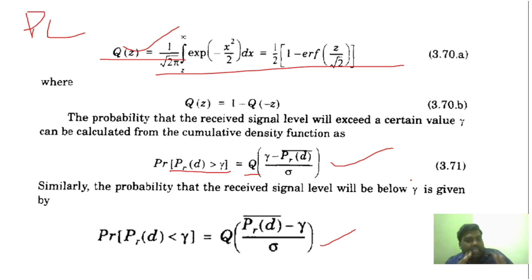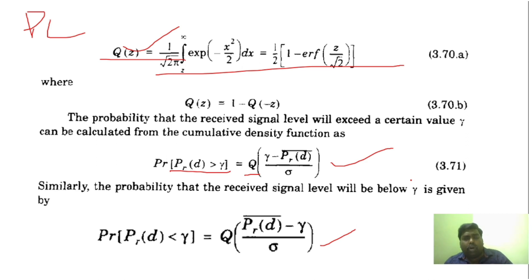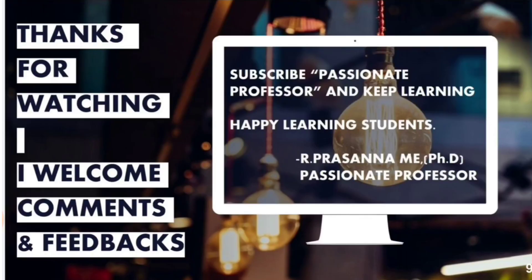I have explained the path loss model, the importance of n and D0, the log normal shadowing model, and how to determine whether the received signal value exceeds the threshold. Hope you understand. It will be very easy for you. Thank you students, thank you for watching. Subscribe to Passionate Professor and keep learning. Thank you very much.